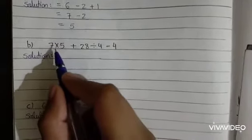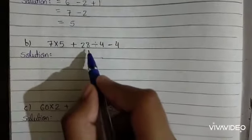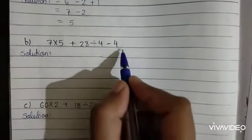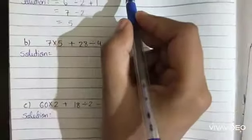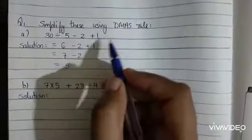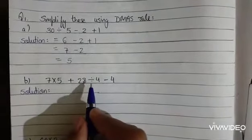Let us solve one more question. 7 into 5, plus 28 divided by 4, minus 4. According to DMAS rule, first we divide. Here division symbol is given, so we divide. 28 divided by 4, 7.